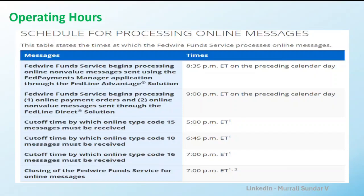Fedwire normally processes three kinds of transactions. The first is customer-to-customer transactions, the second is bank-to-bank transactions, and the third is special account transactions. Special accounts include MNCs from different countries holding accounts at the Federal Reserve, central banks of other countries, or foreign banks maintaining accounts at the Federal Reserve. All fund transfers in these scenarios are considered special account transfers, and Fedwire has a cutoff time for each of these three transaction types.